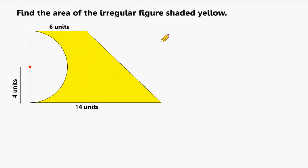So what we're going to do is take the area of the trapezoid, pretending the whole thing is shaded, and then subtract from it the area of this semicircle.